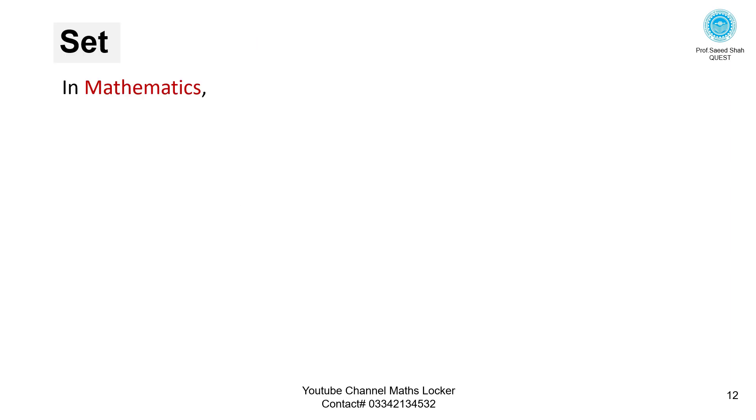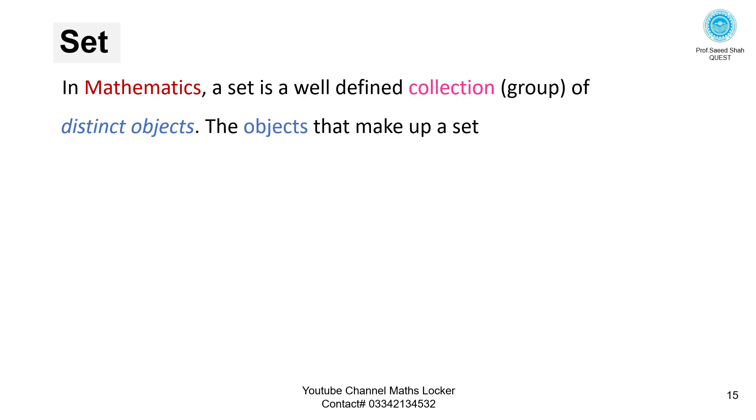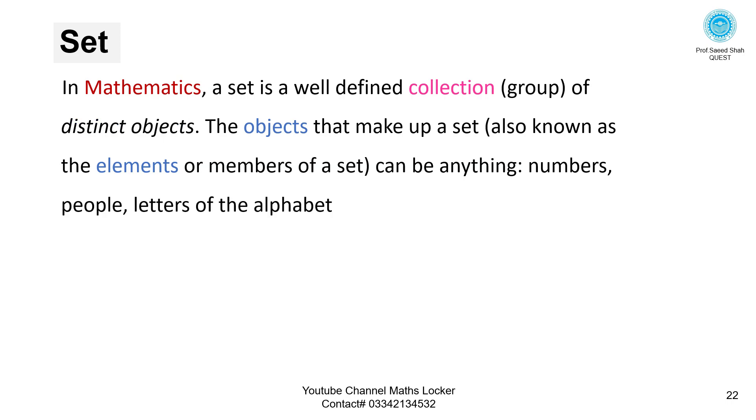Set. In mathematics, a set is a well-defined collection, group, or distinct objects. The word distinct is important here. The objects that make up a set, also known as the elements or members of a set, can be anything: numbers, people, letters of the alphabet and so on. For example, a set of fruits.